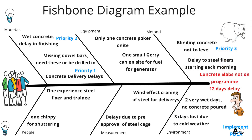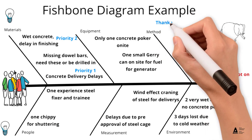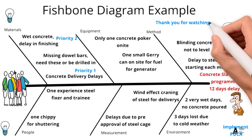That's a very short example of a fishbone diagram and how it can be designed to get to the root cause of potential problems. Normally there'll be a lot of issues causing a delay — in this example, a 12-day delay in concrete slabs, where five slabs a week were planned. There's a whole range of reasons for the delays, but we're trying to get to the root cause, overcome that, build on it, and improve. Hope you got something out of it — thank you very much.